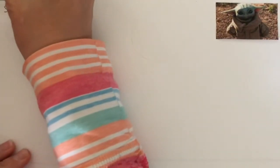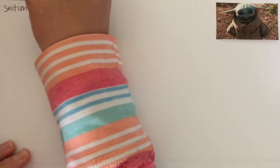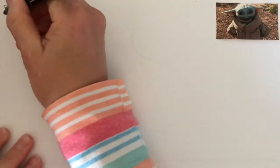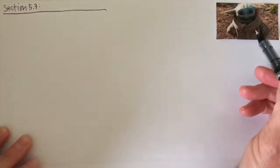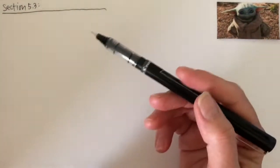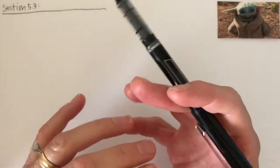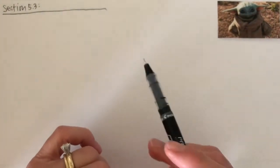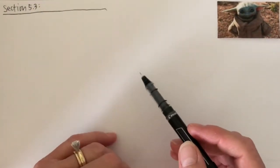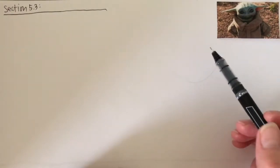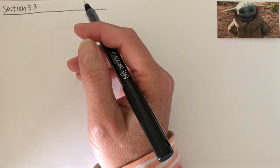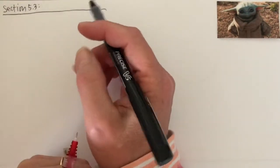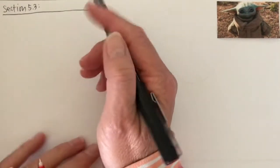We're going to talk about section 5.3 today, and I'm not going to tell you yet what the name of this subject or this section is. I've got Baby Yoda with us. All of these videos, we're talking about so much math — numbers, functions, and graphs — so I thought it might be a good idea for each different section to have a different little buddy with us to help keep each one distinct.